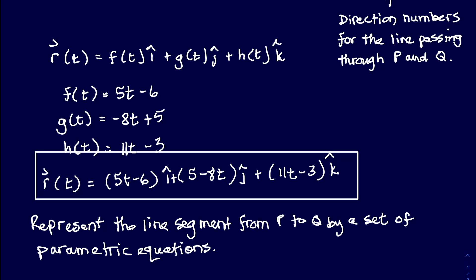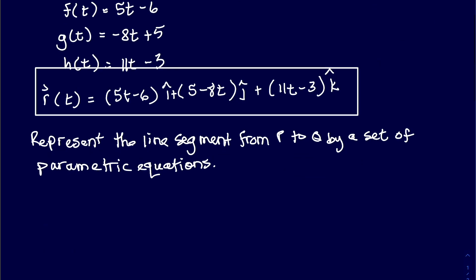Alright, so now doing that, you just need to take your f(t) and set it equal to x. So we would just get x would equal to f(t), and so that's going to give us x is equal to 5t - 6.